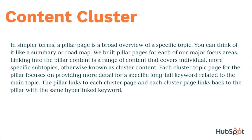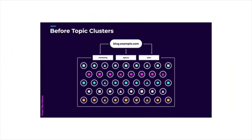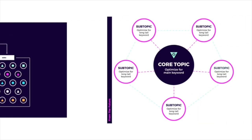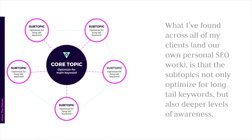A content cluster is a little bit different. This is a definitive definition from HubSpot, but I want to show you what these look like with some graphics from The Future. Before topic clusters, most websites have content about marketing, about their agency, about sales — and it all lives on the blog, just floating. But when you start to build out topic clusters, you have the subtopics all linked possibly to each other, but also into the core topic. The core ultimate post lives in the middle. What I've found across all my clients is that subtopics not only optimize for long-tail keywords, but also for deeper levels of awareness. As one of them starts to rank, they all start to rank better as well.